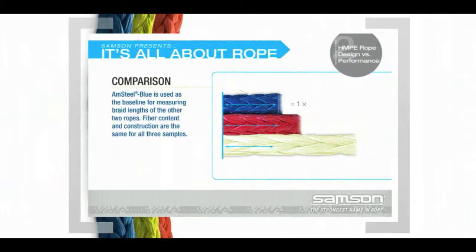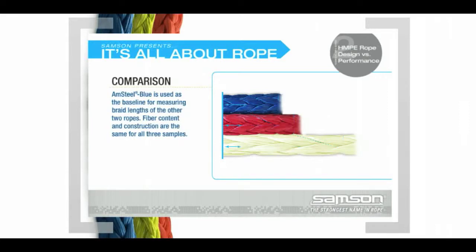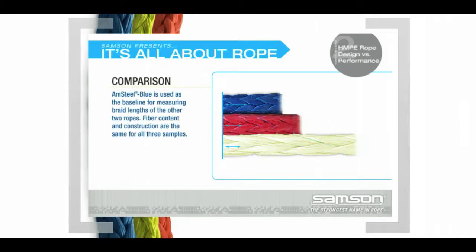In this illustration, the blue rope at the top is Amsteel Blue, Samson's flagship rope, used as the baseline for measuring the braid lengths of the other two ropes. The red rope in the middle has a slightly longer braid length — 1.1 times the length of Amsteel Blue. The rope on the bottom has a very long braid cycle length, at 2.1 times that of Amsteel Blue. Fiber content is the same for all three samples.